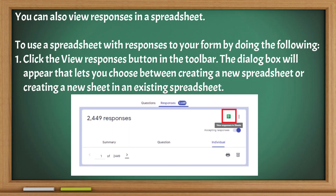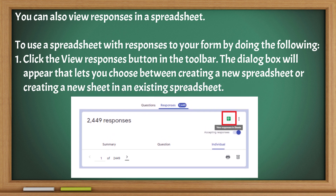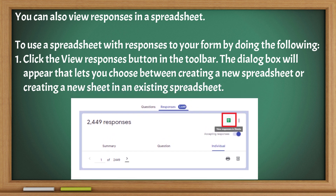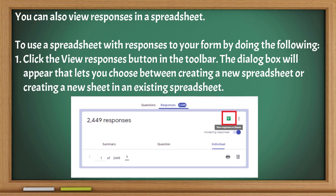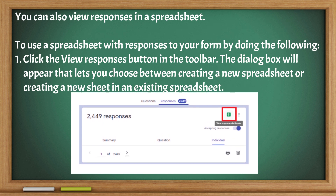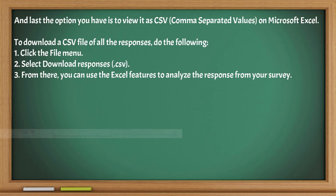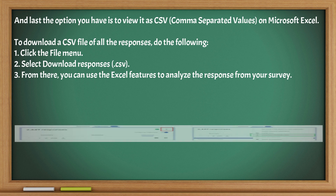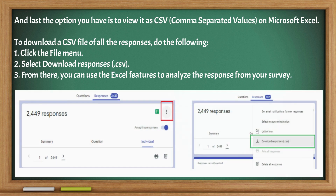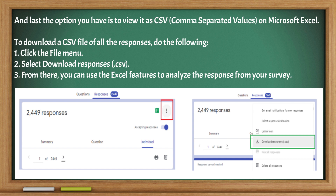You can also view responses in a spreadsheet. To use a spreadsheet with responses to your form, click the View Responses button in the toolbar. A dialog box will appear letting you choose between creating a new spreadsheet or creating a new sheet in an existing spreadsheet. The last option is to view it as CSV, or comma-separated values, on Microsoft Excel.